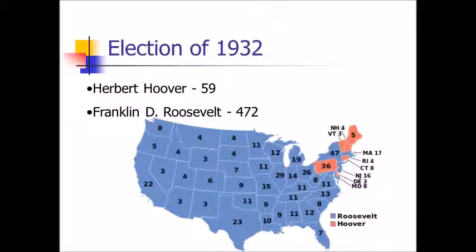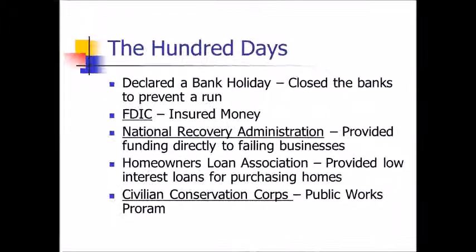FDR managed to win the presidency and not by a little — his electoral victory was 472 to 59. He won nearly every state. It was a massive defeat of an incumbent president. Herbert Hoover was done.